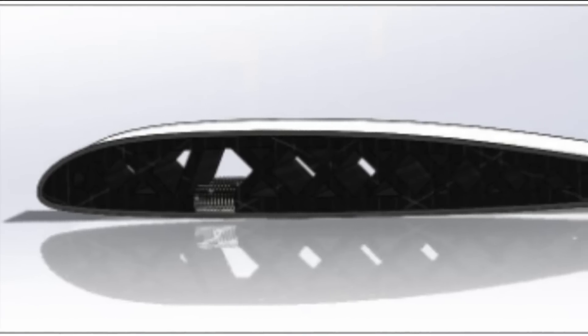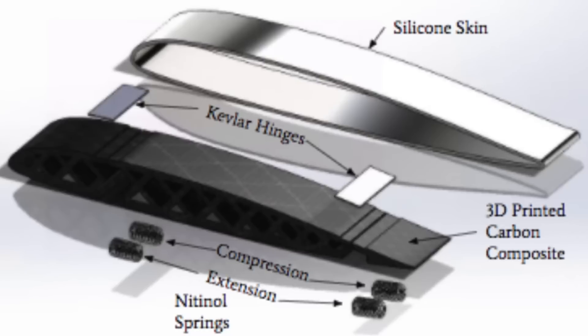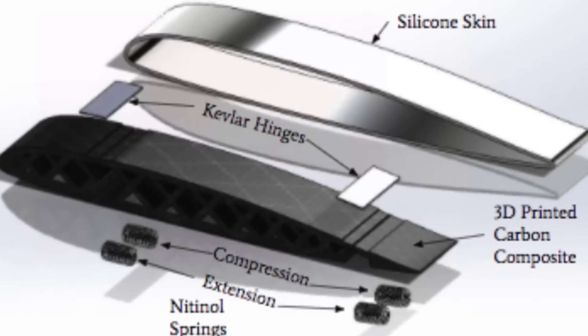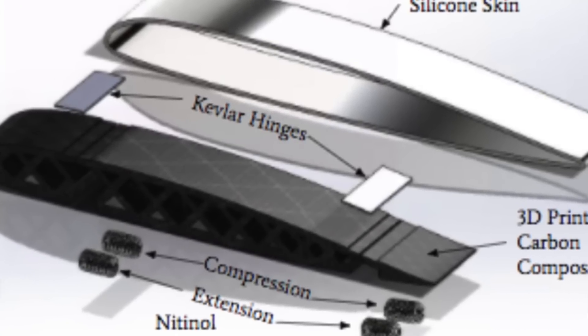At the end of the spring semester, we had decided on a radically new design. This design made use of a lattice structure of 3D-printed carbon composite for strength throughout the airfoil. We opted for two flex points on the wing and planned to achieve upward and downward deflection using nitinol compression and extension springs.